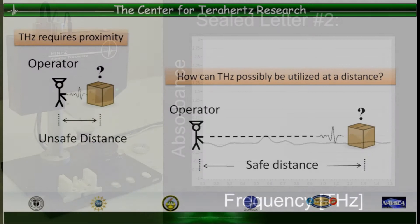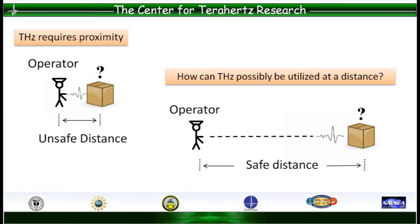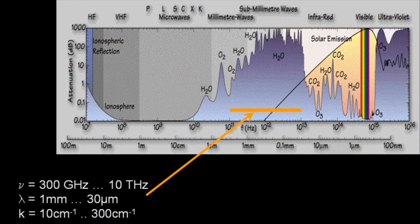Until now, terahertz detection has been limited to local distances due to the current detection method's need for forward signal collection, and also unavoidably high attenuation of the terahertz by water vapor and air.